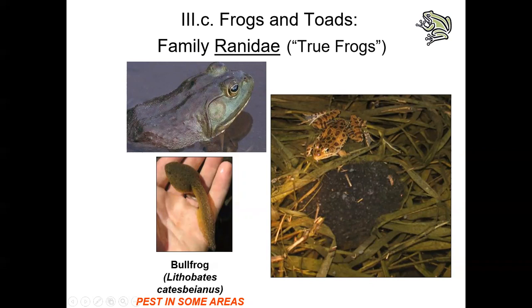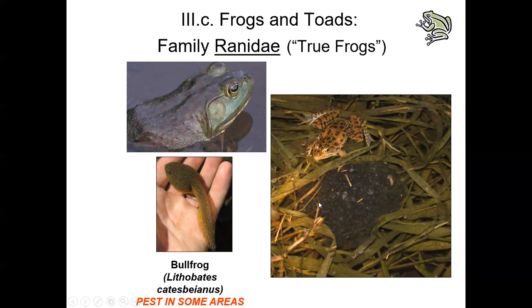Tadpoles develop into adolescent froglets and finally into adult frogs. In the family Ranidae, all tadpoles are herbivorous and feed mostly on algae, while juveniles and adults eat insects. Larger ranids like bullfrogs will eat other frogs, turtles, snakes, birds, and small mammals — essentially anything that fits in their mouth. Geographic distribution is cosmopolitan except for South America and most of Australia. Indiana has eight species of ranids, including the familiar northern leopard frog, whose egg mass is roughly the size of a softball.